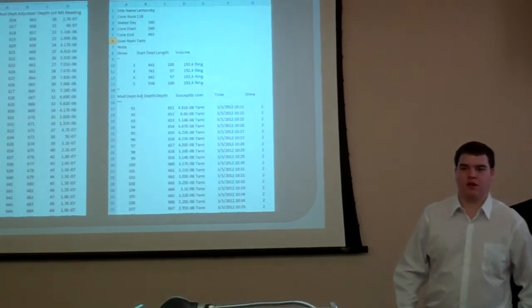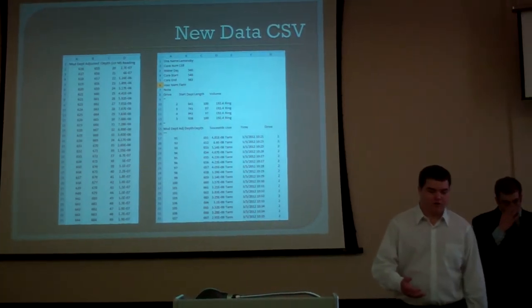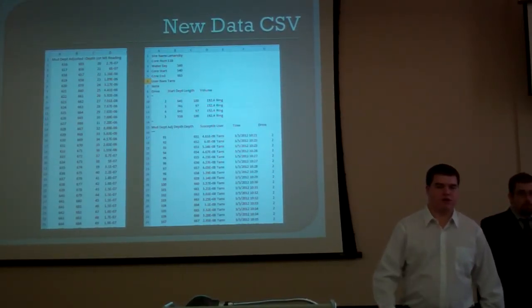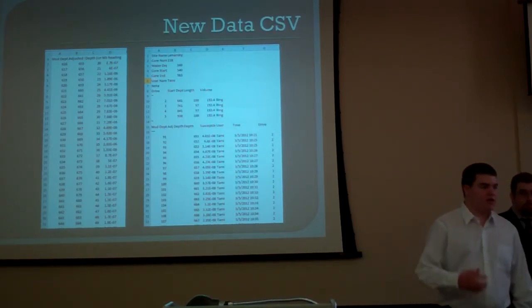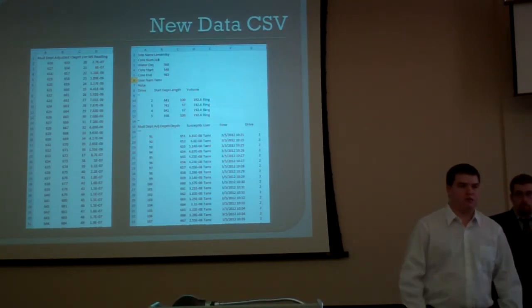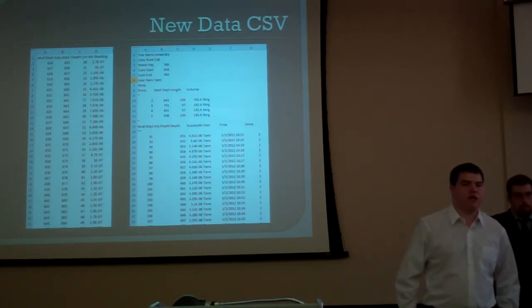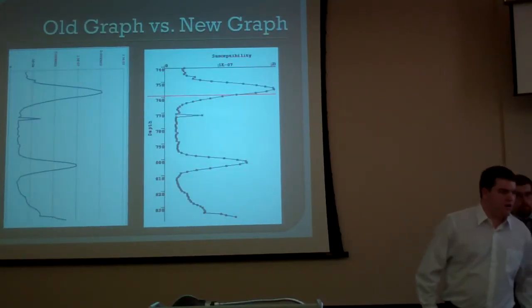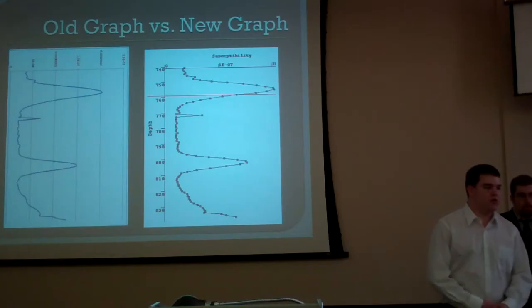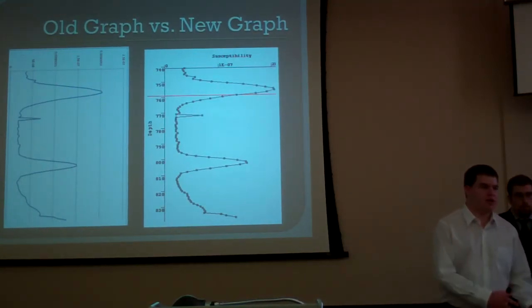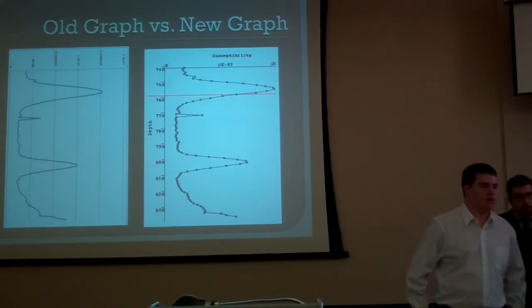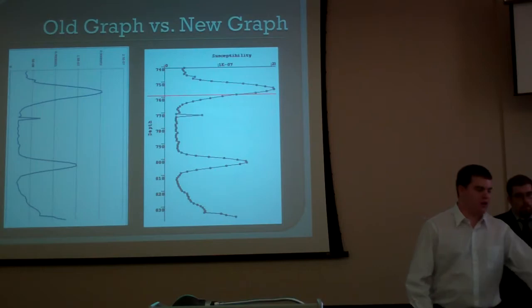After taking samples from the old program, all drive data was saved in separate CSVs — drive one in one file, drive two in another, and so on. Our program fixes that by storing the user name, core name, and all drives and samples into a single CSV for simple loading and space saving. The old program also required opening the graph in Excel, where data points were not easily detectable. Our graph displays each sample as a clearly visible square point forming a uniform, easily readable line.